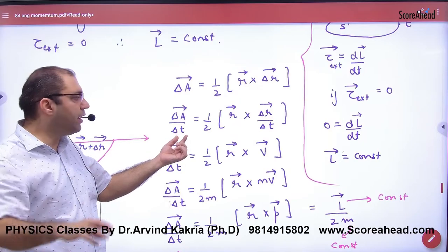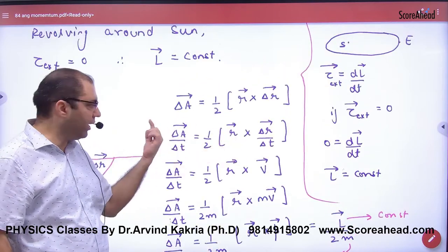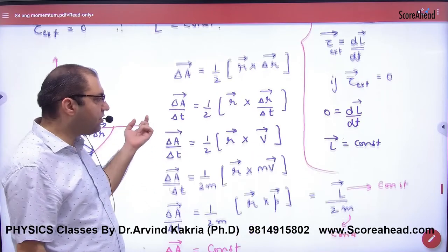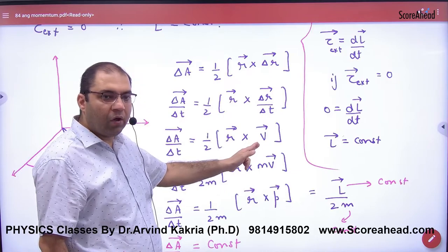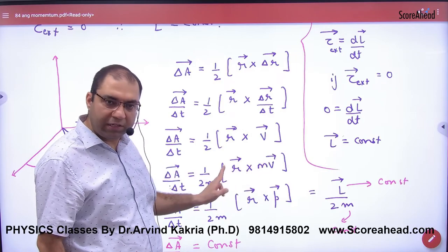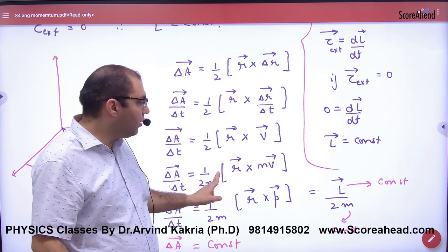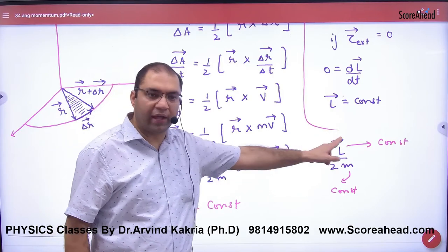In this step, divide both sides by delta T. So what will it be? Aerial velocity. One other step, what will it be? V. And the last step, mass multiply, mass divide. Mass multiply, mass divide. What will it be? M into V is P, and R cross P is L.